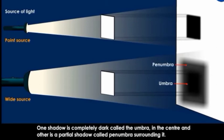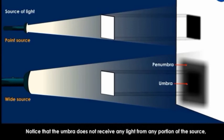The shadow formed by an extended light source has a central dark Umbra surrounded by a lighter Penumbra region.